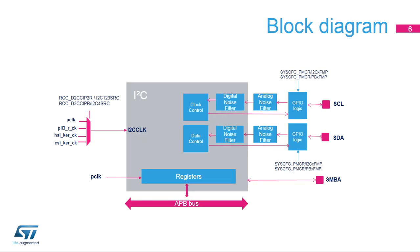Here is the I2C block diagram. The registers are accessed through the APB bus, and the peripheral is clocked with the I2C clock, which is independent from the APB clock. The I2C clock can be selected from among the PLL, APB clock, the high-speed internal RC oscillator with a frequency from 8 to 64 MHz, and the low-power internal 4 MHz RC oscillator. Analog and digital noise filters are present on the SCL and SDA lines, and a 20 mA driving capability is enabled using the control bits in the system configuration registers.